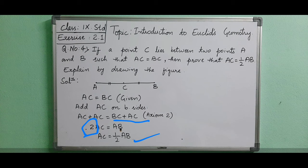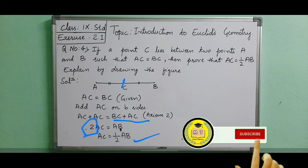When we are saying that AC is equal to half of AB, it means that C is the midpoint of the line AB. So, what does it indicate? AC is equal to half of AB.